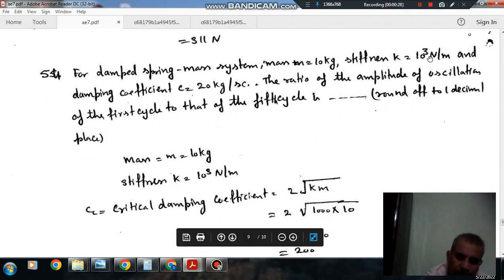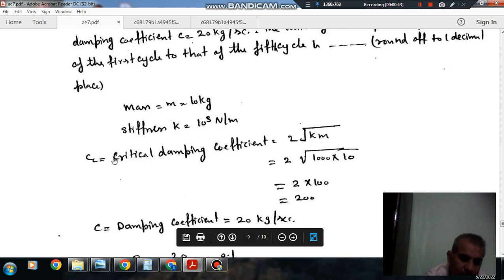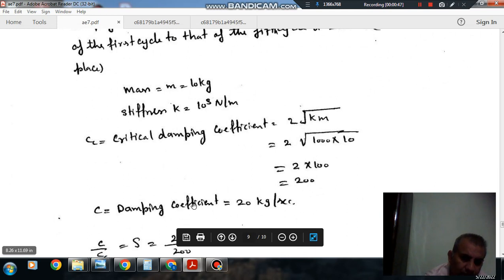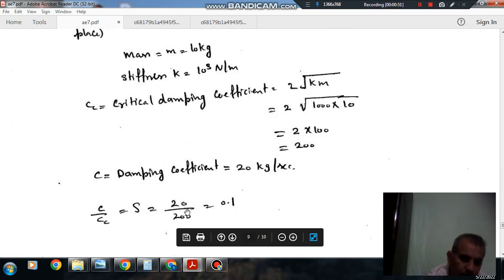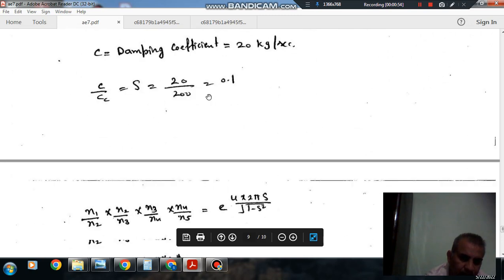So mass M is 10 kg, stiffness is 10³ N per meter, and C is given. You know that in case of damped vibration, critical damping coefficient is 2√(KM). So K is 1000 and M is 10, so CC critical damping coefficient comes out as 200. The damping coefficient given is 20 kg per second, so the damping ratio is 20 by 200, which is 0.1.